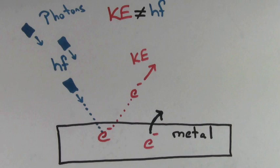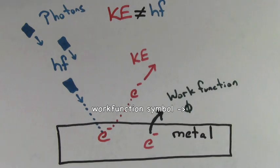The minimum amount of energy required to remove an electron from a metal is called the work function. Each metal has its own specific work function which tells you how hard it will be to remove an electron from that metal.